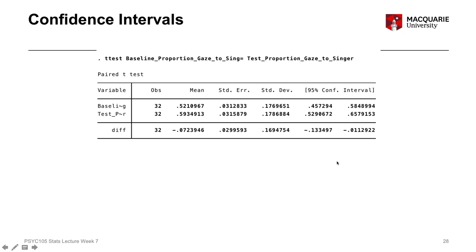The next thing I want to talk about is just a little note on confidence intervals. Confidence intervals can help us in trying to identify where we think the population parameter is going to lie. When we're looking at sample data, we think the sample data is representative of a wider population effect. So when we're looking at the mean of a particular variable in our sample, we think that's going to be representative approximately of what the real mean would be in the population. But because there's sampling variability, our population mean score is very unlikely to be exactly the same as our sample mean score.